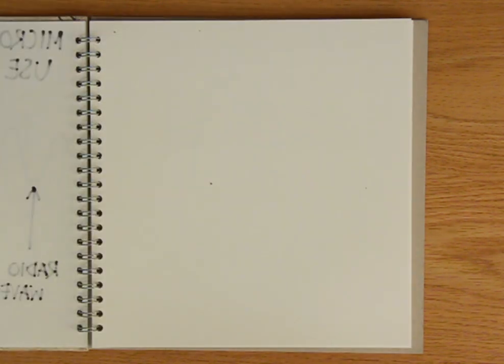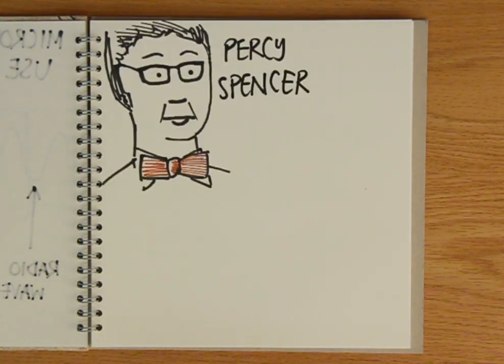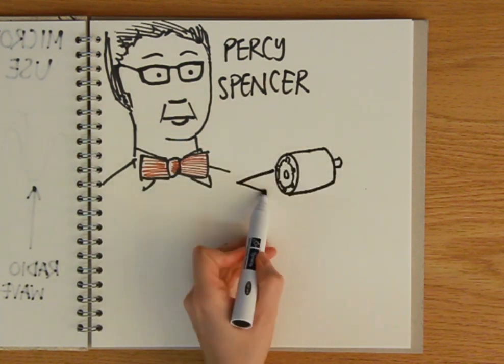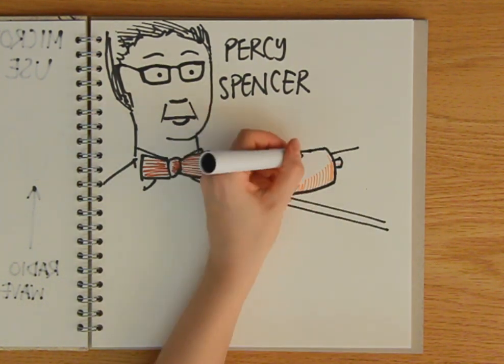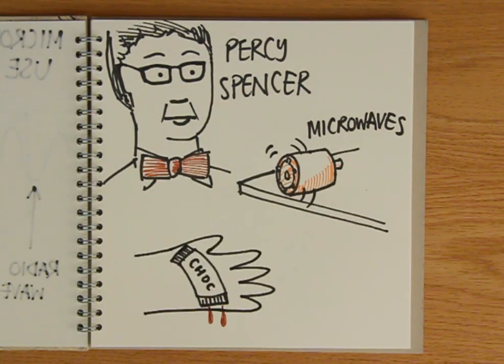The heating power of microwaves was first discovered accidentally during the Second World War. One day, an American engineer called Percy Spencer was working on a unit for producing high-intensity microwaves for use in radar when he noticed that the chocolate bar in his pocket began to melt.